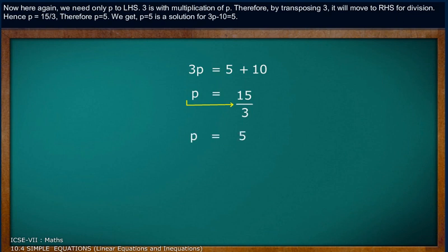Hence, p equals 15 divided by 3. Therefore, p equals 5. We get p equals 5 is the solution for 3p minus 10 equals 5.